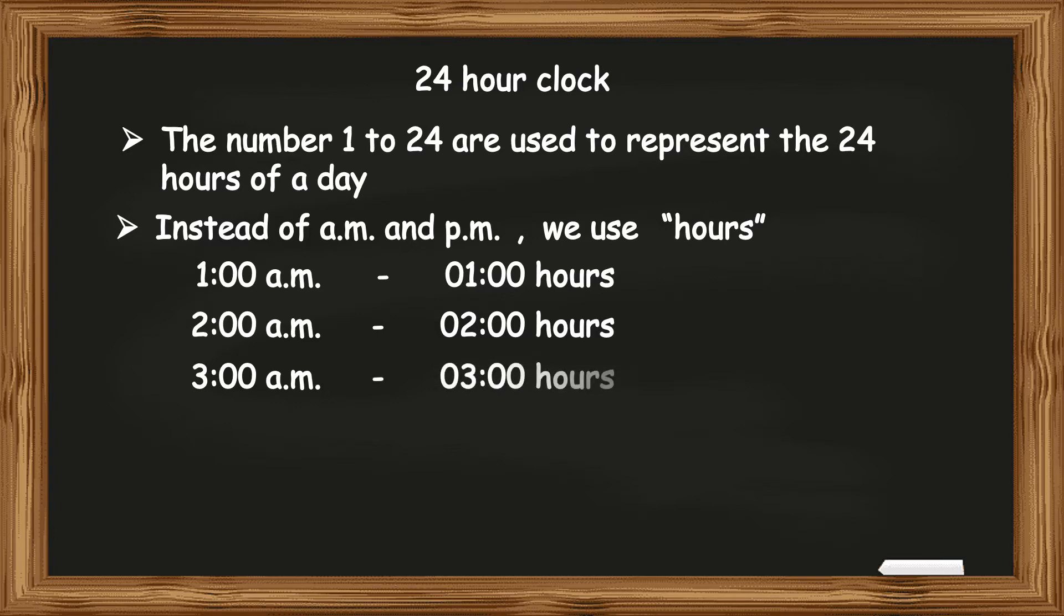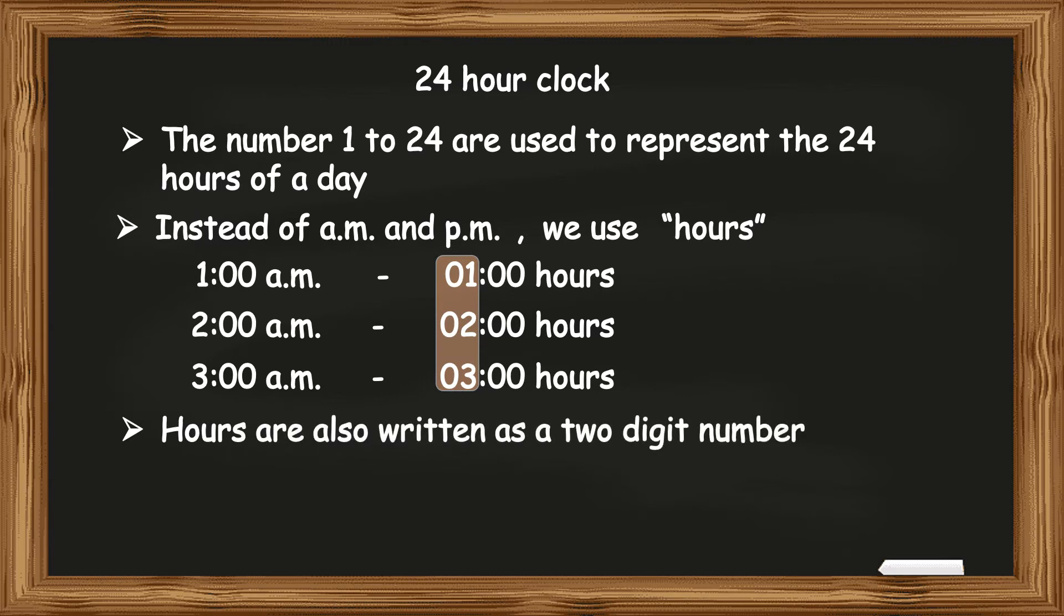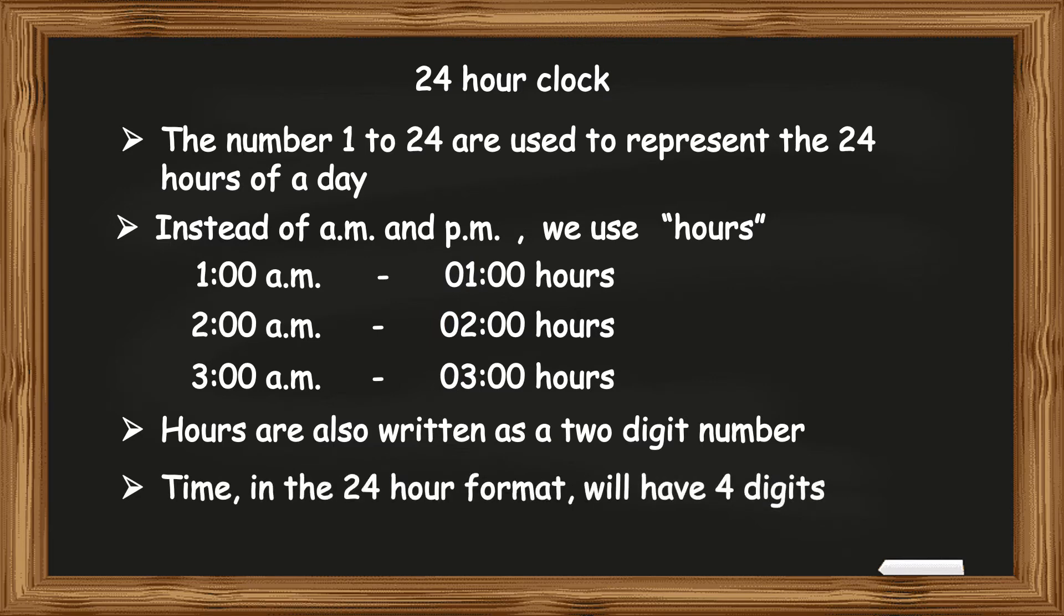You must note here that when the time is converted from the 12-hour format to the 24-hour format, the hours are also written as a 2-digit number. This means that time in 24-hour format will have 4 digits. 2 digits for hours and 2 digits for minutes. So, when a new day begins at 12 midnight, the time will be written as 0000 hours.